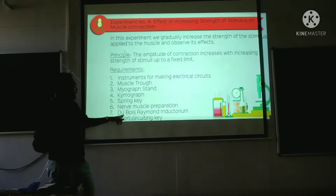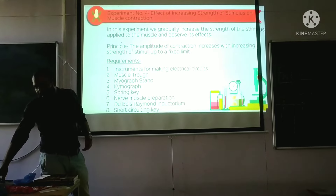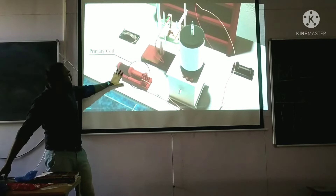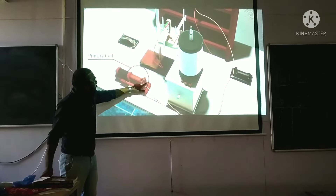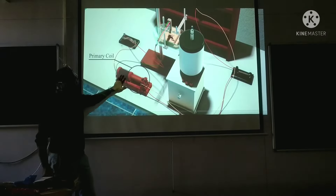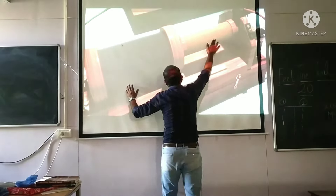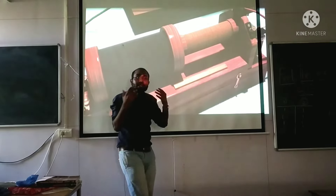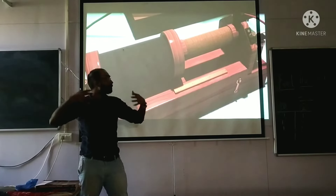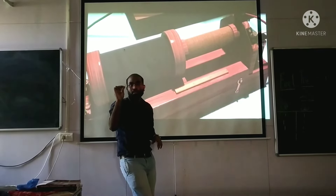The whole experiment comes down to the Du Bois Raymond Inductorium, and the short circuiting key is an additional point. This instrument has a primary coil and a secondary coil. The significance of this is: when the distance between the two coils is increased, the strength of stimulus will decrease.